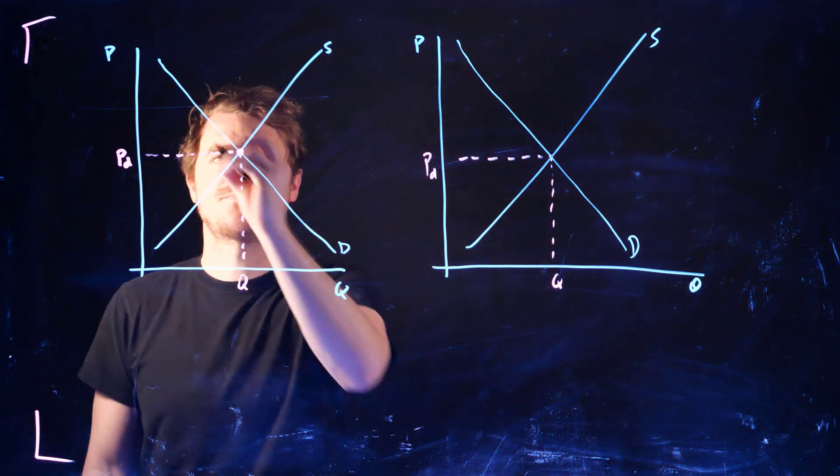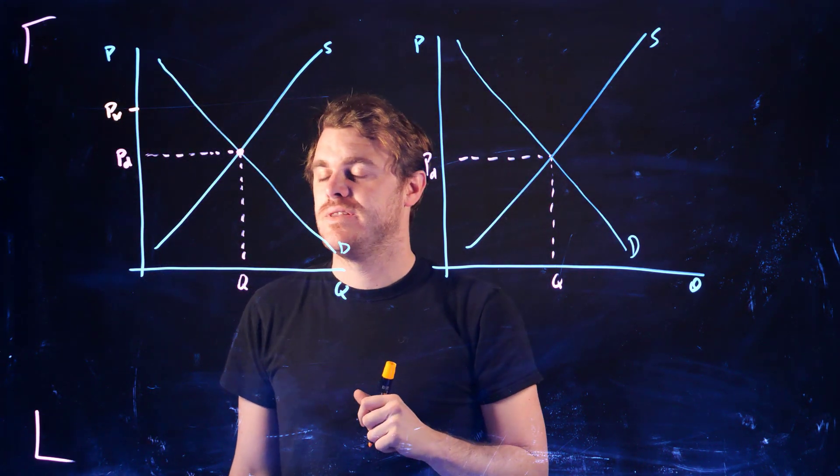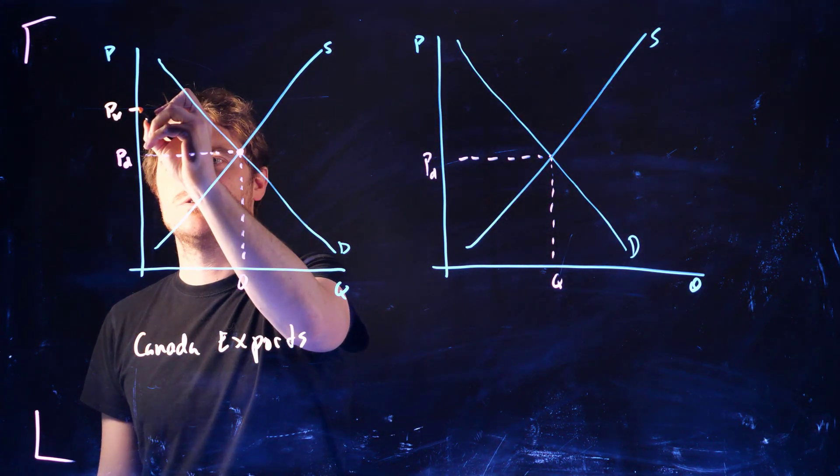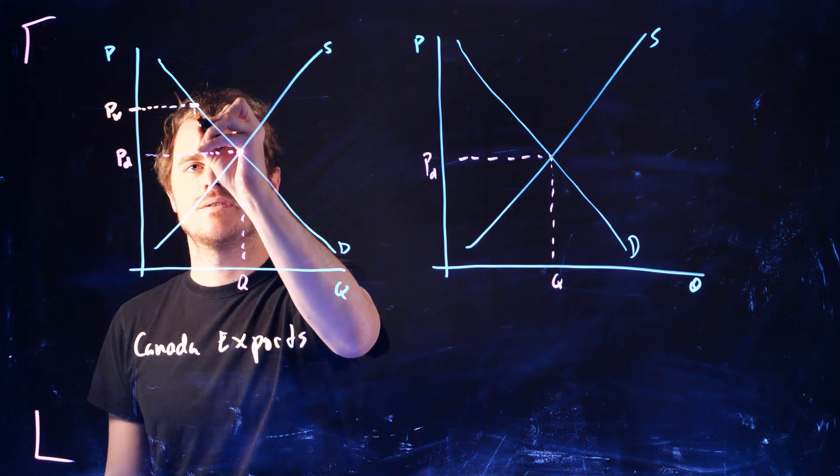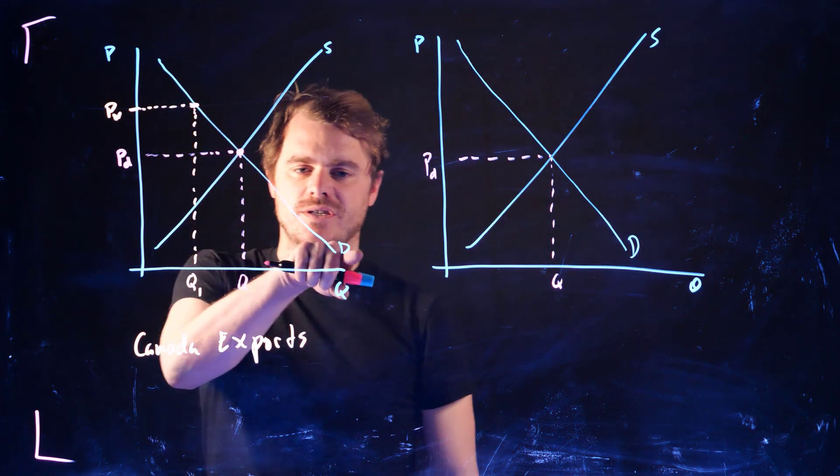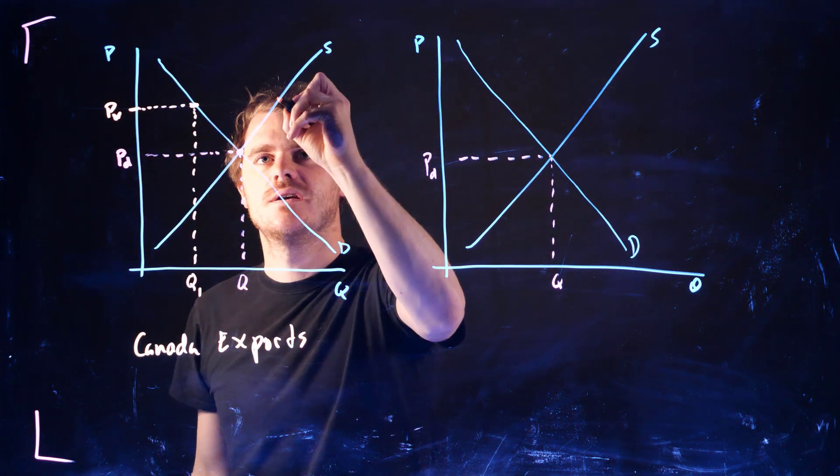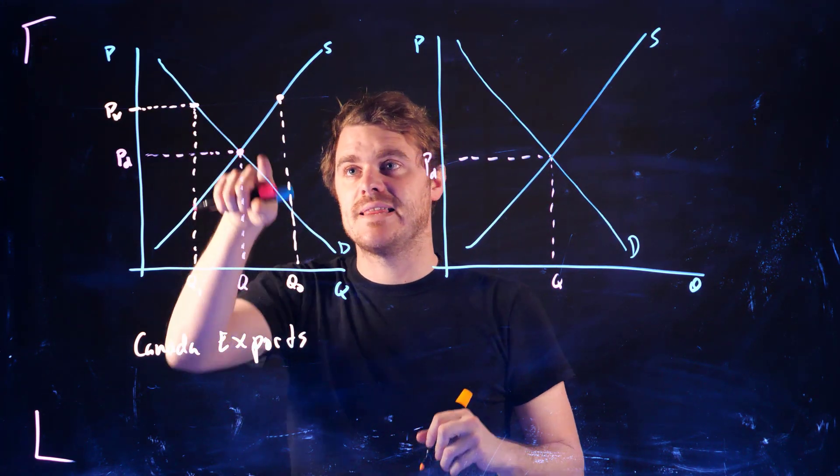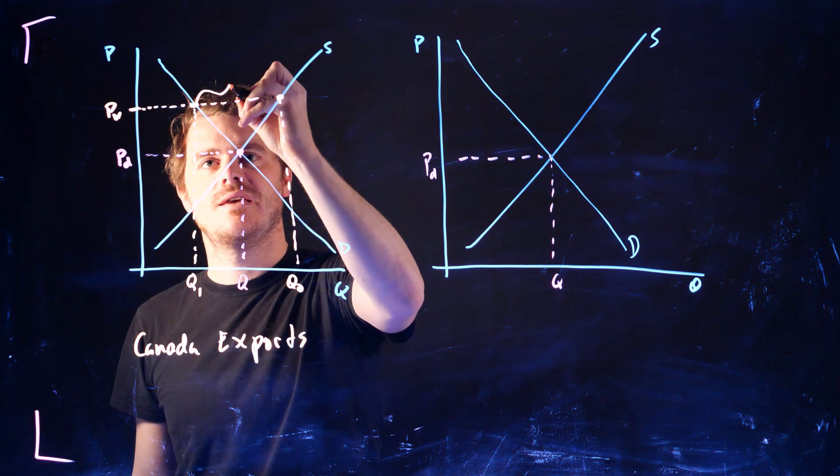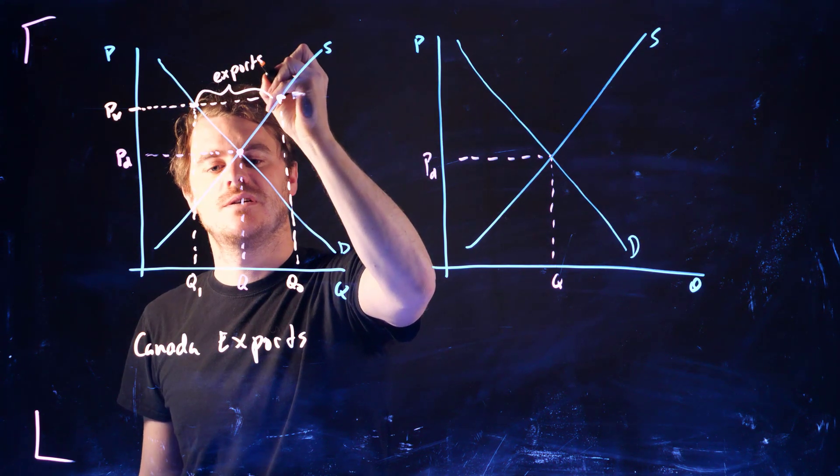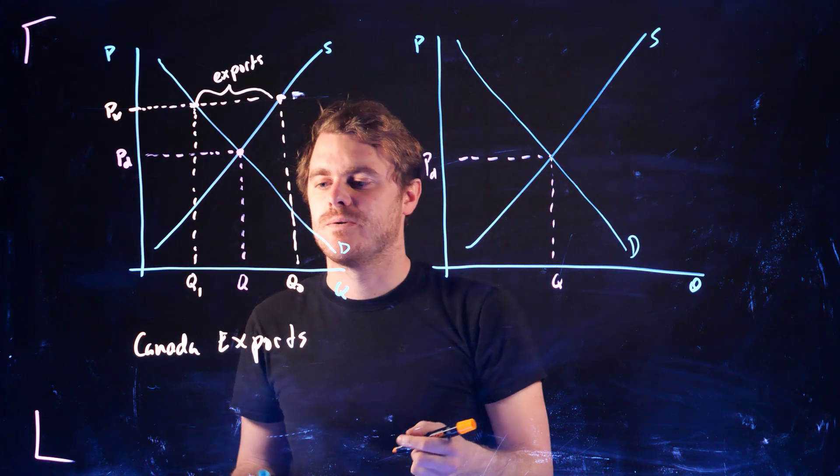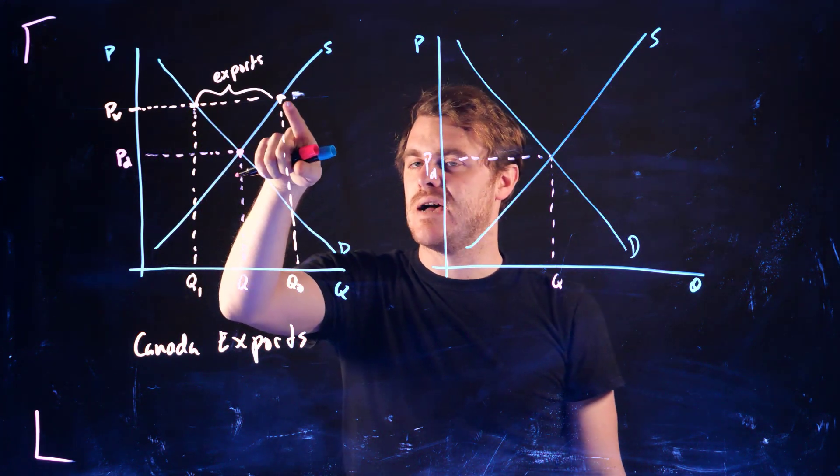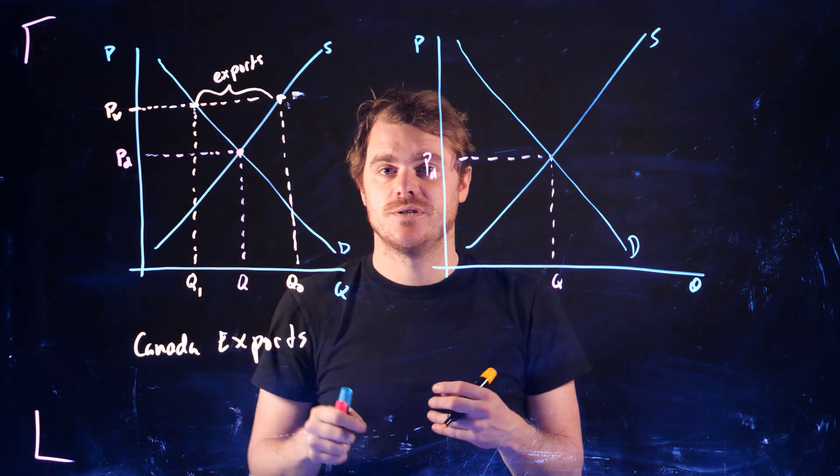Now imagine that the world price is above the domestic price. So this would be Canada exports. If this world price is above this domestic price, then this Q1 is how much Canadian buyers would demand at that price, and this Q2 would be how much Canadian producers are willing to supply at that price. And so the difference here is going to be the amount of exports. So when the world price is above this autarchy price, this is how much Canadian consumers are going to demand at that price, this is how much Canadian producers are going to produce, and the difference is how much Canadian producers will export.